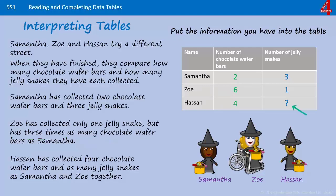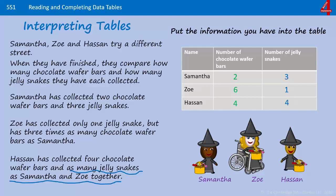The next unknown value is how many jelly snakes Hassan collected. Hassan collected as many jelly snakes as Samantha and Zoe together, so we look at how many jelly snakes Samantha collected and how many Zoe collected, and add those together: three add one, that's four.